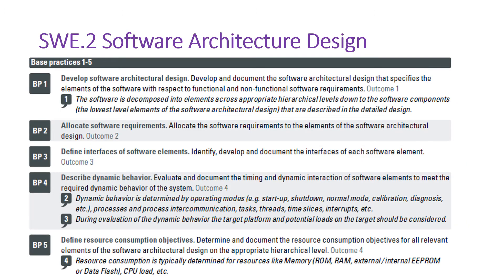Now let's get into the base practices of SW E2. It has nine base practices. BP1 talks about developing software architecture design — defining individual software elements from the functional and non-functional requirements defined in the SRS document. BP2 is about allocating software requirements — allocating each software requirement to a defined software element.